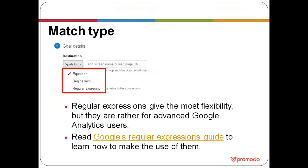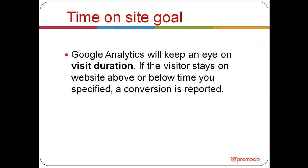The next type of goal is the time on site goal. If you have a large content website and want visitors to stay as long as possible, you can tell Google Analytics to count a conversion when the user stays for more than a defined period of time. Conversely, for customer support websites where you want users to find answers quickly, you can set the goal to 'less than' a given time period and track that kind of goal.